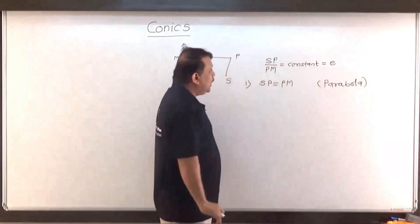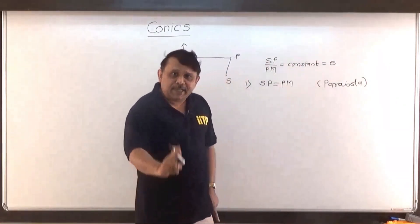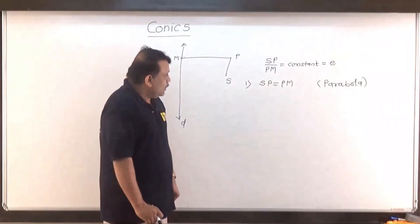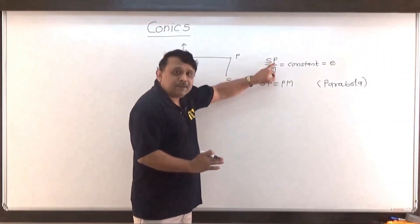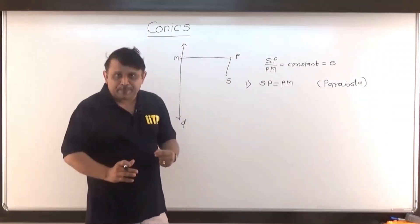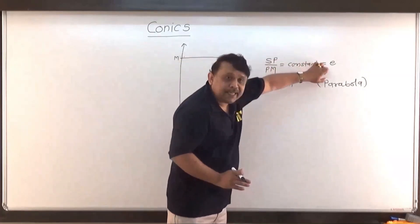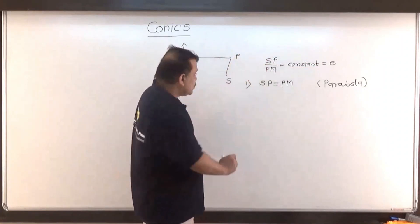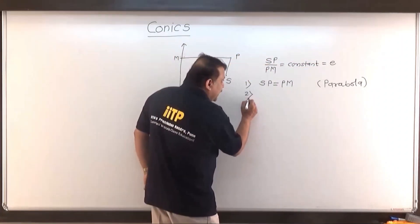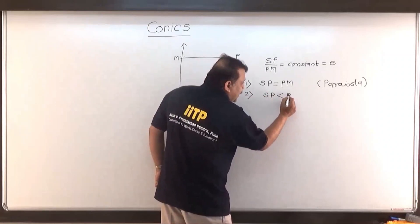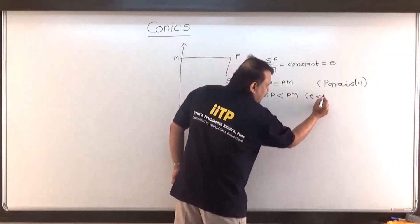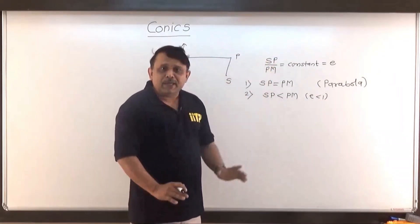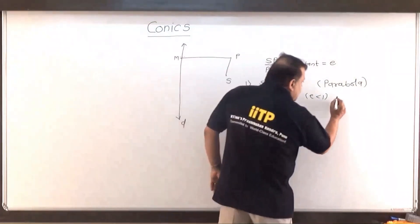In a parabola as a conic, e is the eccentricity which is exactly equal to 1, because SP equals PM. Now if I consider the distance SP smaller than the distance PM, then this eccentricity will be less than 1, because the numerator is smaller than the denominator. So case two: SP is less than PM, which means e is less than 1. In such a case the locus of point P is called an ellipse.